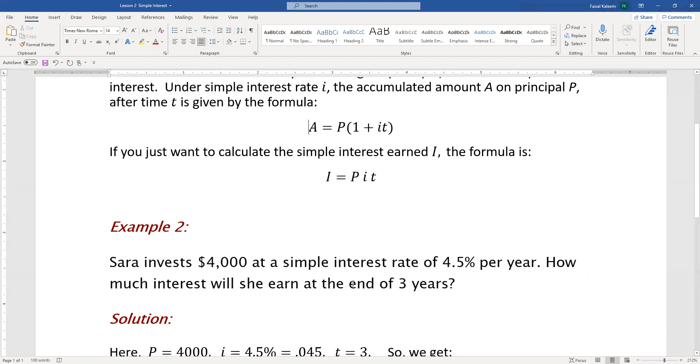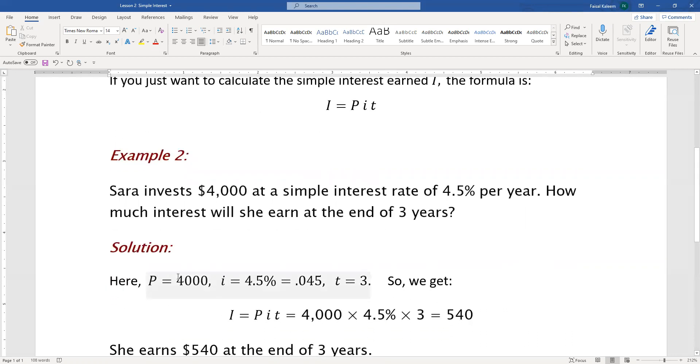How much interest will she earn at the end of 3 years? Here, P = 4000. The lowercase i is 4.5% - remember from lesson one that lowercase letters are for interest rates whereas uppercase letters are for interest amounts. So i = 4.5% = 0.045.